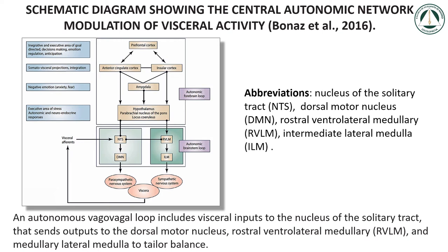This autonomic forebrain loop is modulated by a forebrain autonomic loop, through cross-talk between the nucleus of the solitary tract and brain areas including the hypothalamus, amygdala, cingulate cortex, insula, and prefrontal cortex, that are also involved in neuroendocrine, emotional, and cognitive controls of behavior.